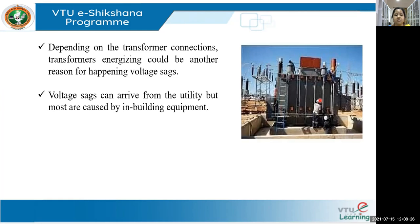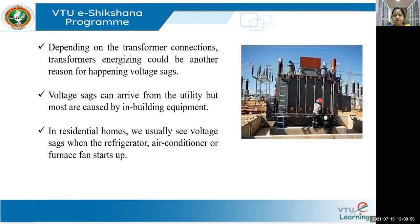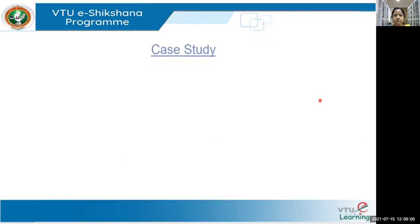Voltage sags can arrive from the utility, but most are caused by in-building equipment. At the consumer end, electronic devices cause many issues. In residential homes, we usually see voltage sags when a refrigerator, air conditioner, or furnace fan starts up.